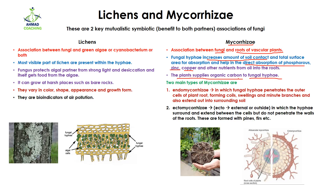Mycorrhiza has two types: the first is endomycorrhiza and the second is ectomycorrhiza. In endomycorrhiza, as the name indicates — endo means inside — the fungal hyphae penetrate the outer cells of the plant roots and form coils, swellings, and minute branches, also extending out into the soil. You can see in this diagram that the fungal hyphae have penetrated the outer cell and entered the internal part of the roots, with some part in the soil and some inside the root.